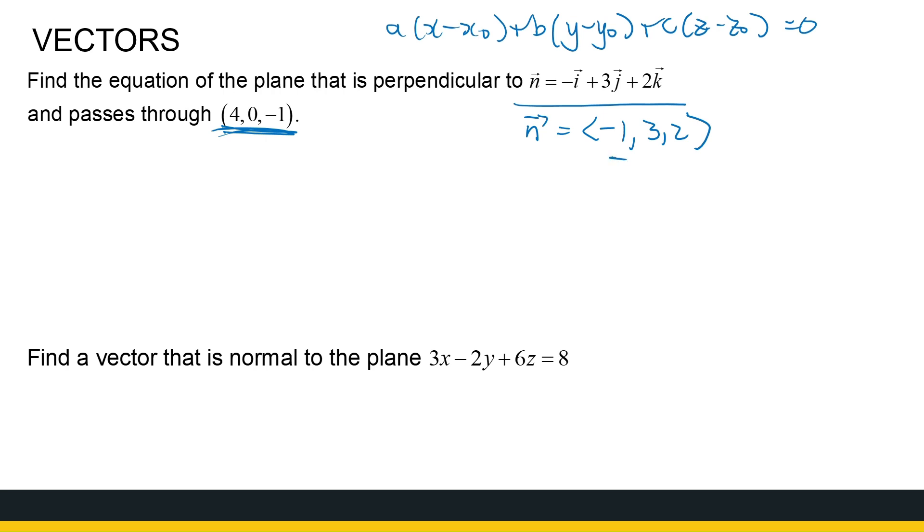So a is -1. So -1(x - 4). b is 3. So +3(y - 0). And c is 2, +2(z - (-1)). So minus minus 1 is plus 1. That is all equal to zero.